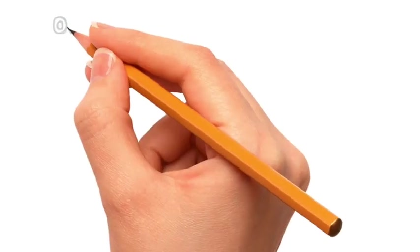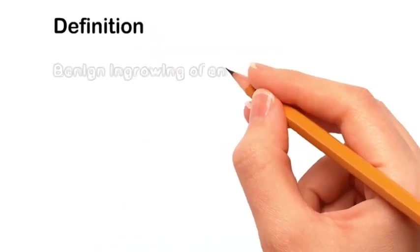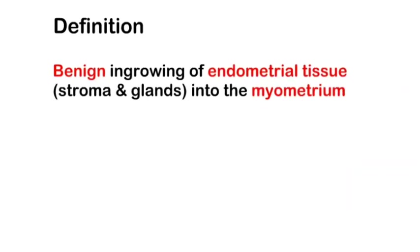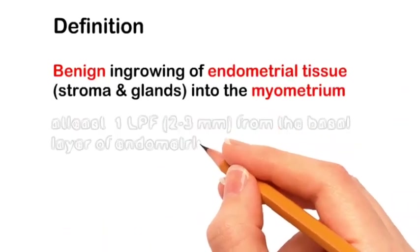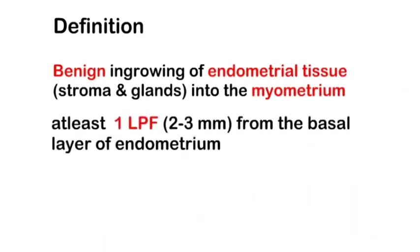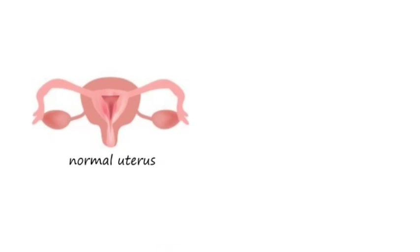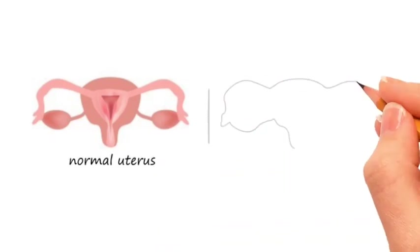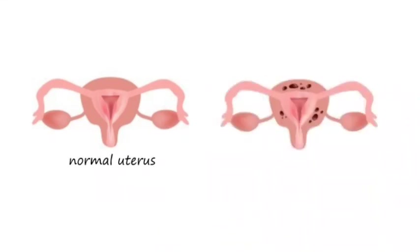Hello friends, in this video we shall learn about adenomyosis. Adenomyosis is defined as the benign ingrowth of endometrial tissue into the myometrium, at least to about one low power field from the basal layer of endometrium. This figure shows the pictorial representation of a normal uterus, while this one represents adenomyosis of the uterus, which will have endometrial tissue in the myometrium.